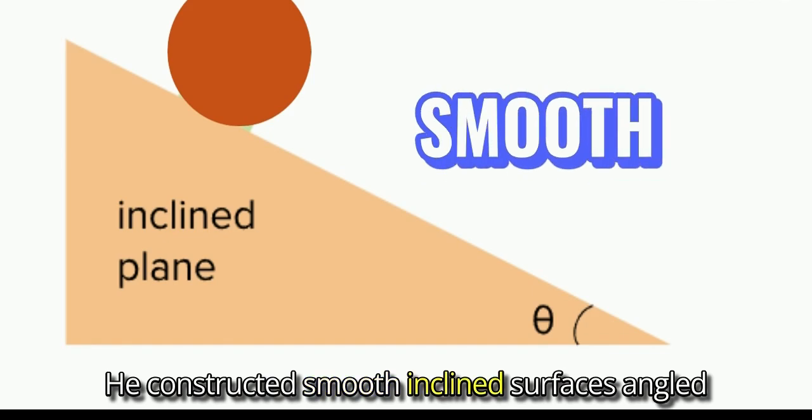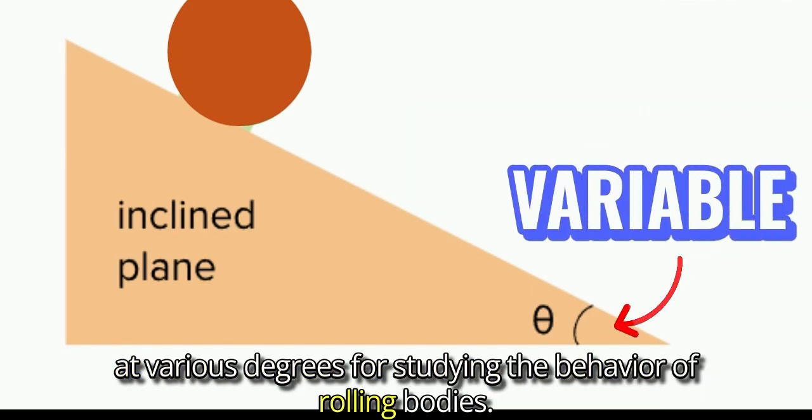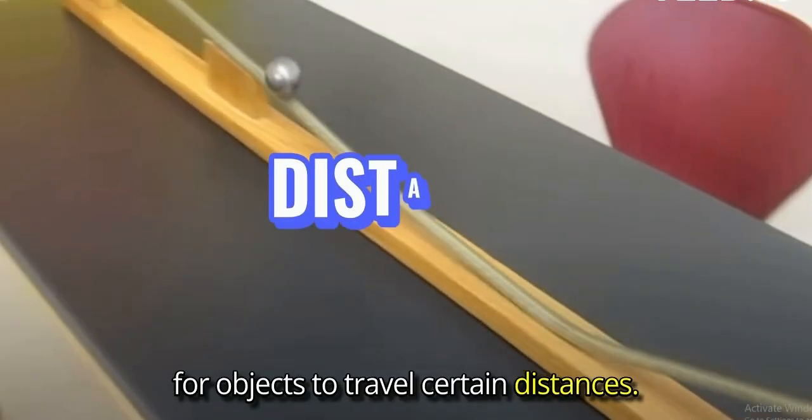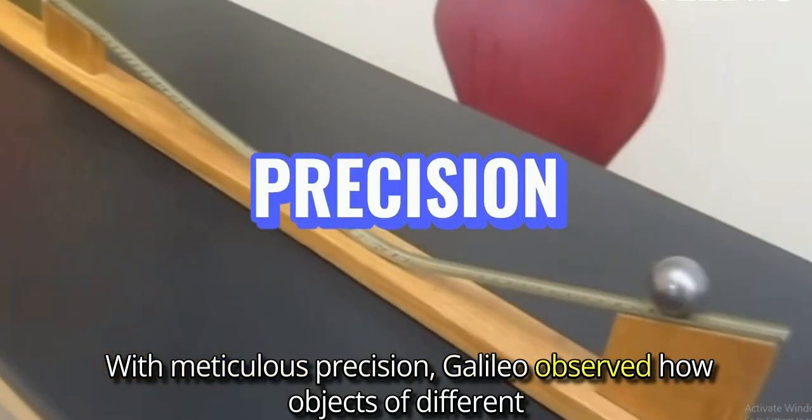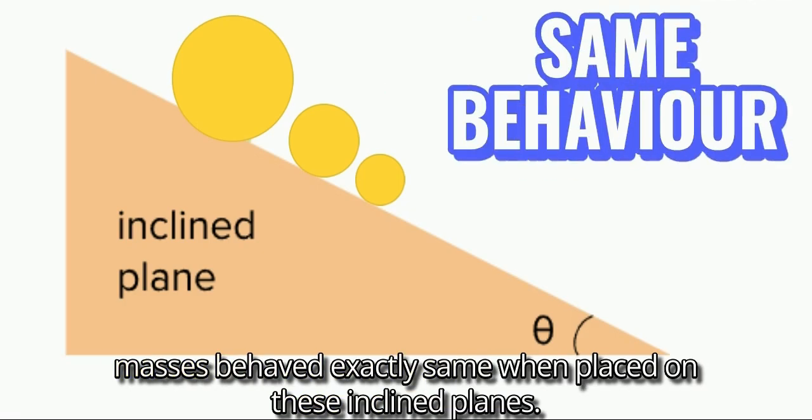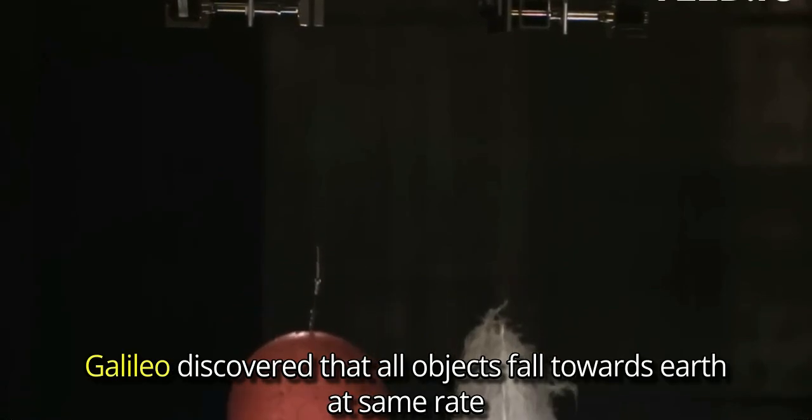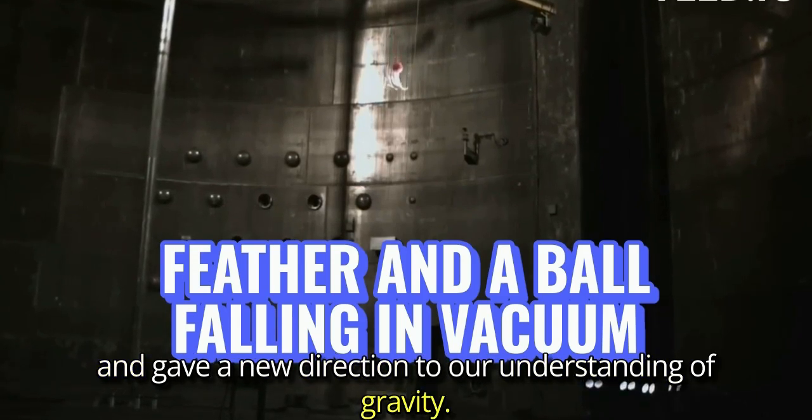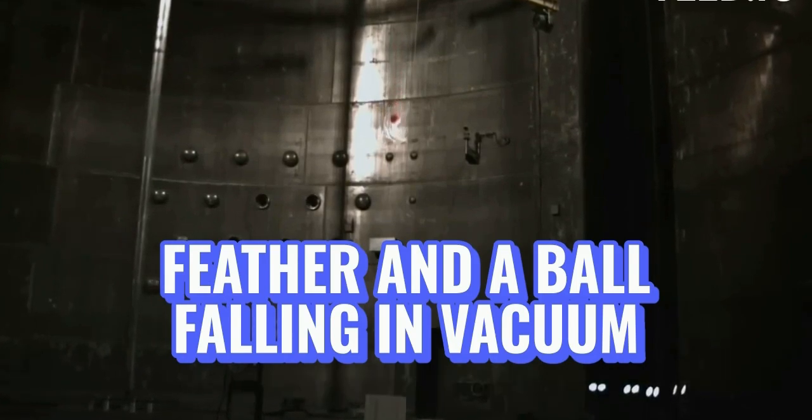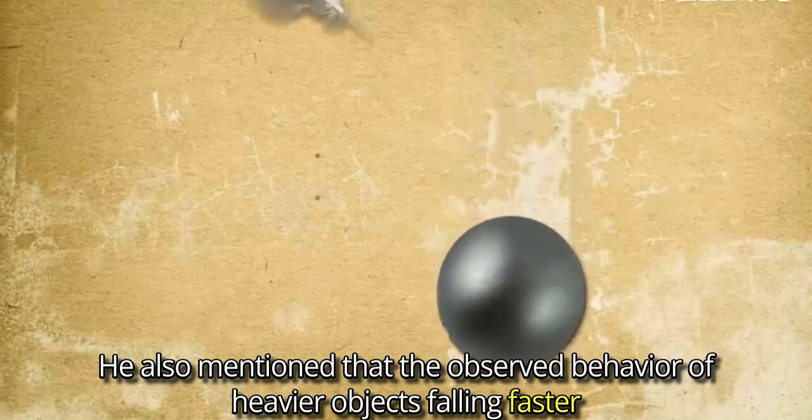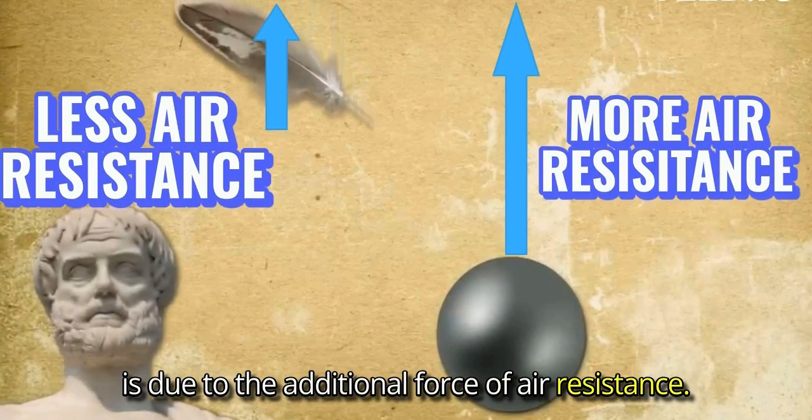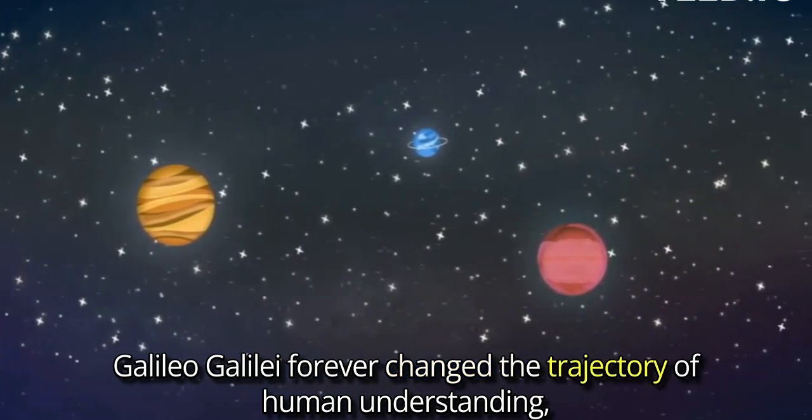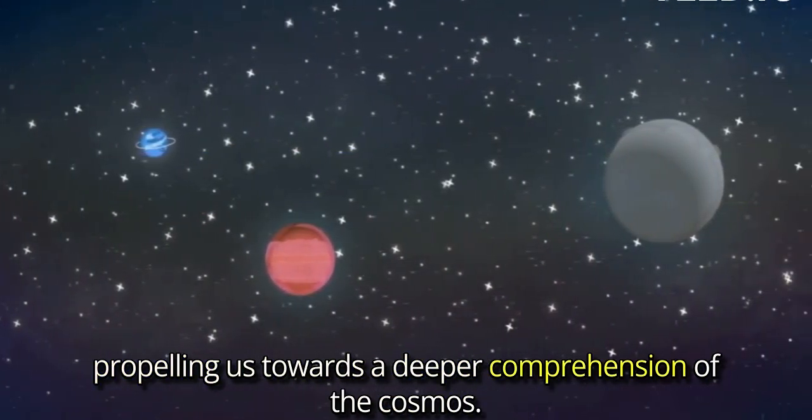He constructed smooth inclined surfaces, angled at various degrees for studying the behaviour of rolling bodies. By carefully adjusting the incline and measuring the time it took for objects to travel certain distances, with meticulous precision, Galileo observed how objects of different masses behaved exactly the same when placed on these inclined planes. Galileo discovered that all objects fall towards Earth at the same rate, and gave a new direction to our understanding of gravity by destroying Aristotle's idea. He also mentioned that the observed behaviour of heavier objects falling faster is due to the additional force of air resistance. Through daring experiments and relentless pursuit of knowledge, Galileo Galilei forever changed the trajectory of human understanding, propelling us towards a deeper comprehension of the cosmos.